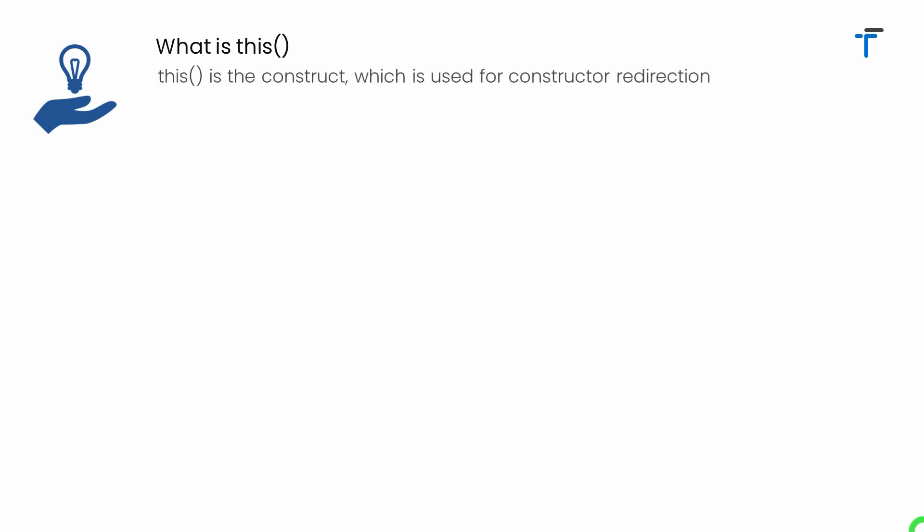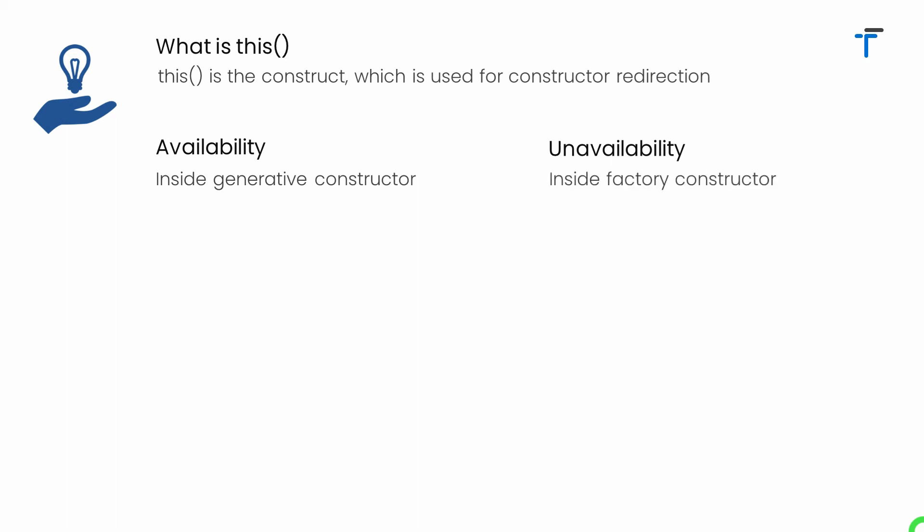Now let's talk about this with parentheses. Whenever we use this with brackets — this() — it is called the this construct and it is mostly used for constructor redirection. It can be used only inside a generative constructor. Make sure this() cannot be used inside a method, and similar to this, it also cannot be used inside a factory constructor.